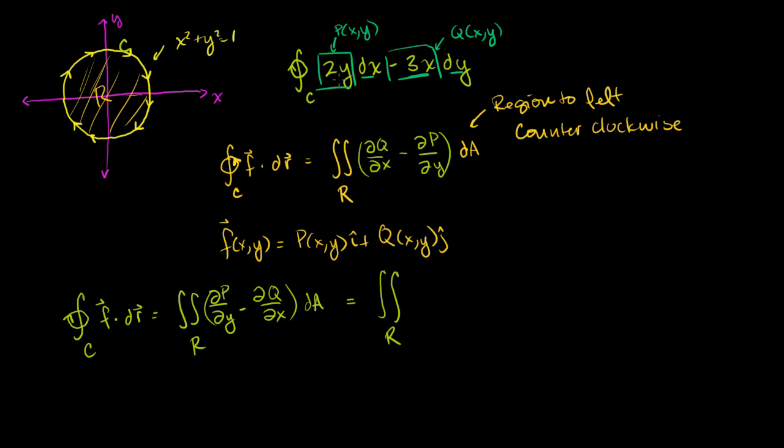So let's take the partial of p with respect to y. Take the derivative of this with respect to y, you get 2. Derivative of 2y is just 2. So you get 2, and then minus the derivative of q with respect to x. Derivative of this with respect to x is minus 3. So we're going to get minus 3, and then all of that dA.